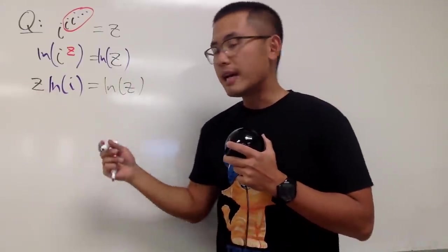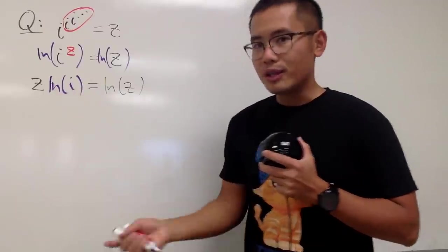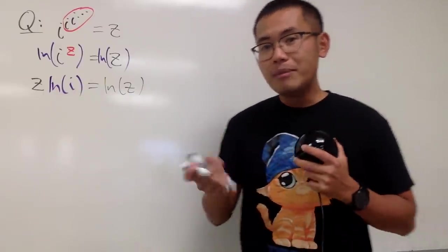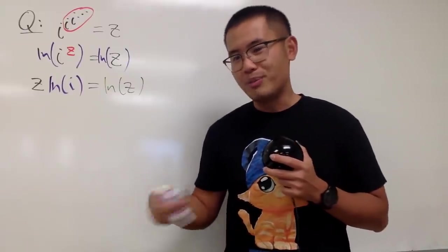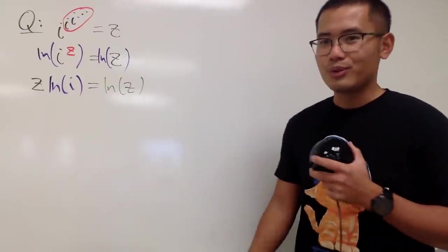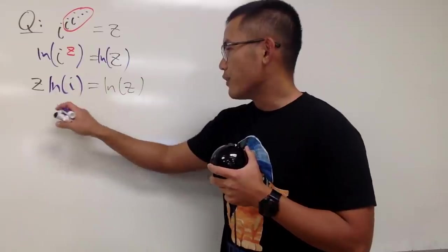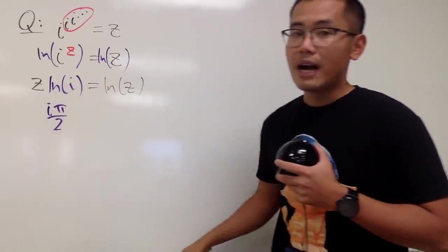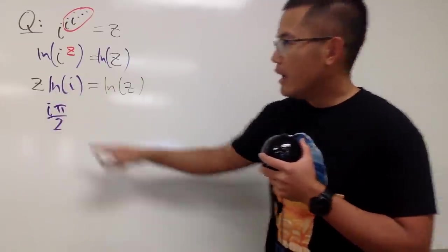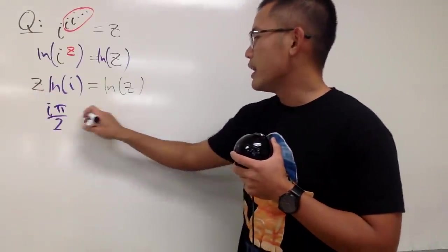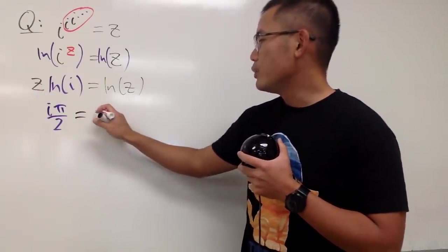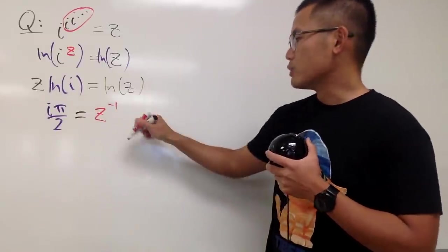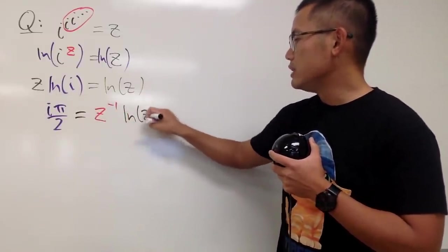Now I will divide z on both sides. For ln i, you can check out my previous video or many other videos. I'll just use the principal value for this one, because I don't want to put down the 2nπ. The answer for ln i is iπ/2. Dividing both sides by z, we get ln i equal to z to the negative one, times ln z.